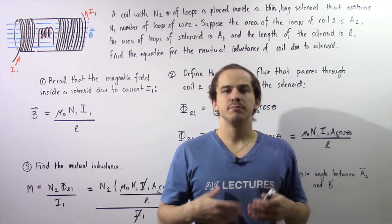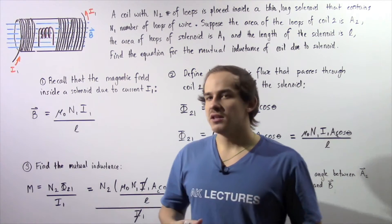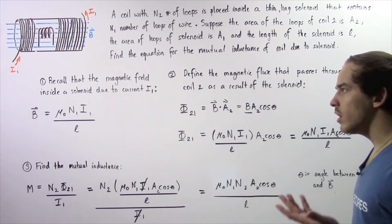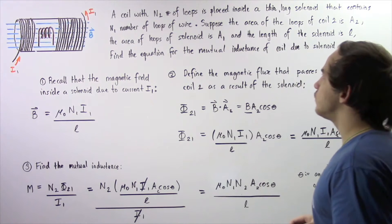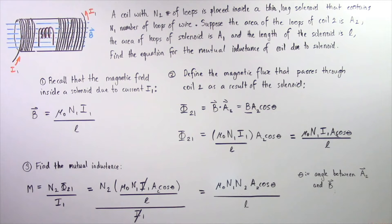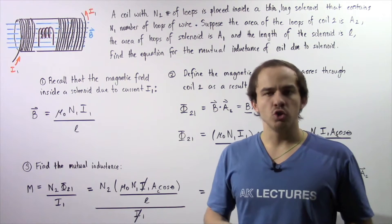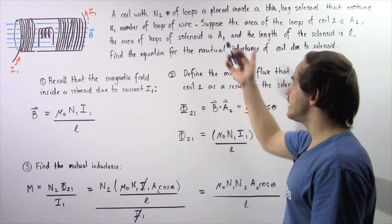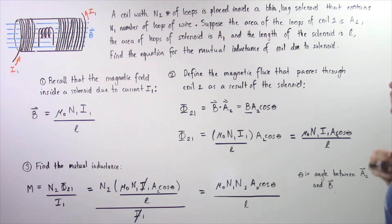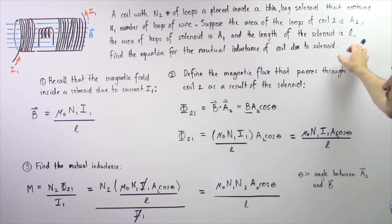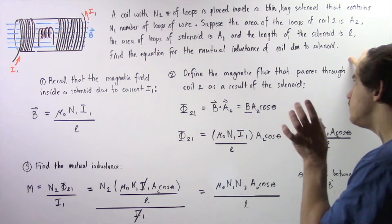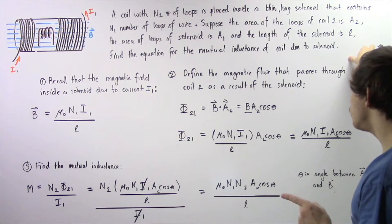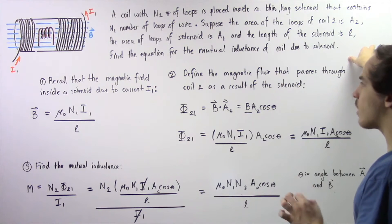Let's continue our discussion on mutual inductance. Suppose a coil, call it coil number 2, with N2 number of loops is placed inside a thin long solenoid that contains N1 number of loops of wire. The area of the loops of coil number 2 is given by A2, the area of loops of the solenoid is given by A1, and the length of the solenoid is given by L. We want to find the equation for the mutual inductance of coil number 2 as a result of the solenoid.